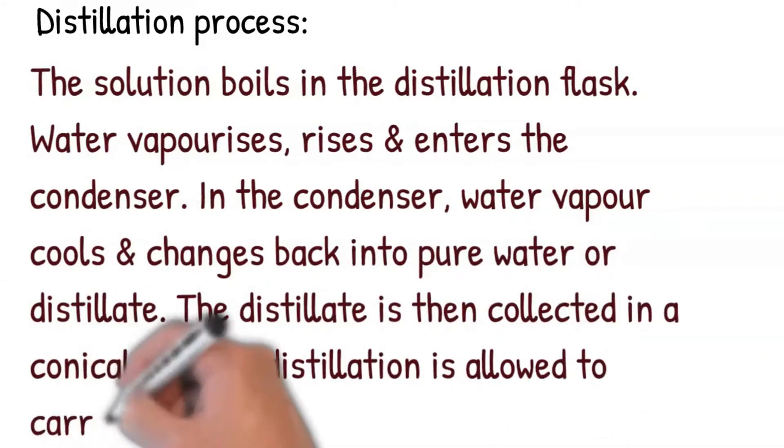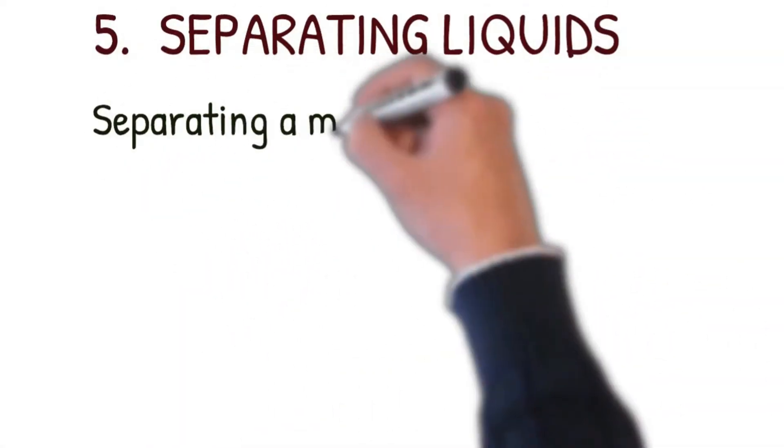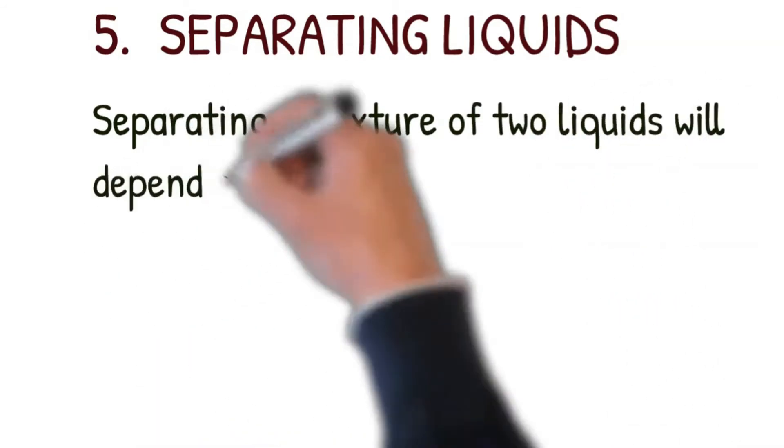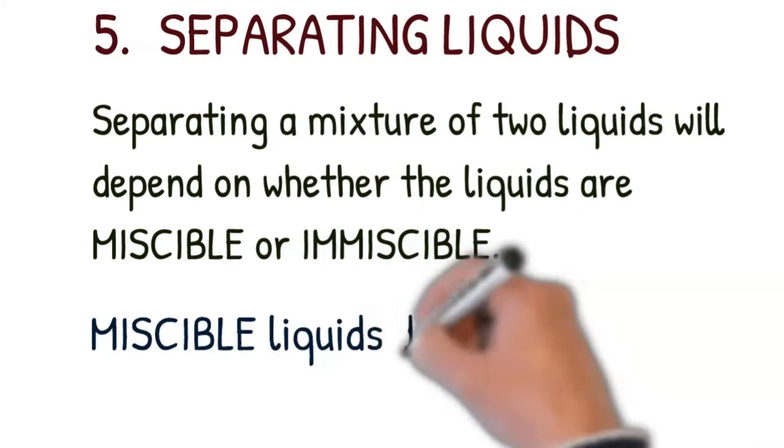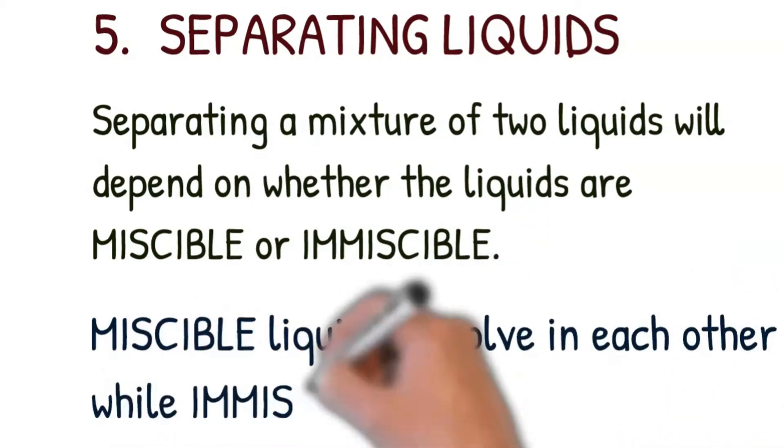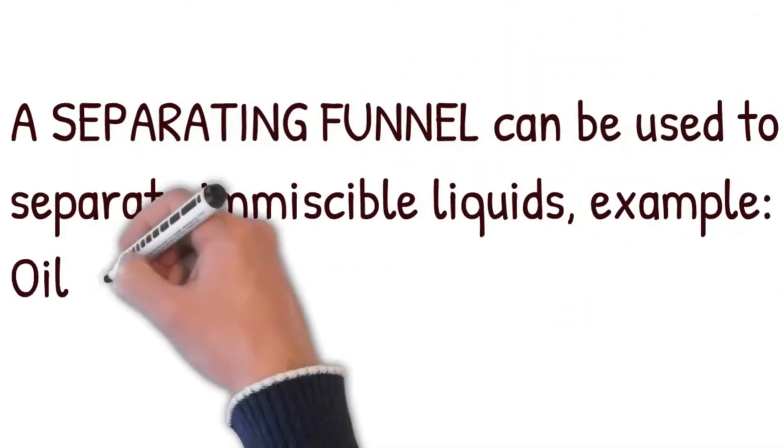Separating liquids. Separating a mixture of two liquids will depend on whether the liquids are miscible or immiscible. Miscible liquids dissolve in each other while immiscible liquids do not. A separating funnel can be used to separate immiscible liquids, example oil and water.